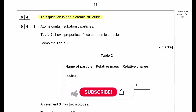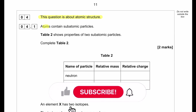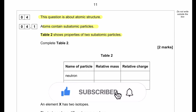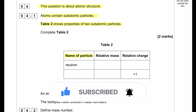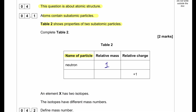This question is about atomic structure. An atom contains subatomic particles. Table 2 shows properties of two subatomic particles — the name of the particle. We can see neutron has a relative mass of 1 and relative charge of 0. A relative charge of positive 1 is actually a proton, so the relative mass will be 1.